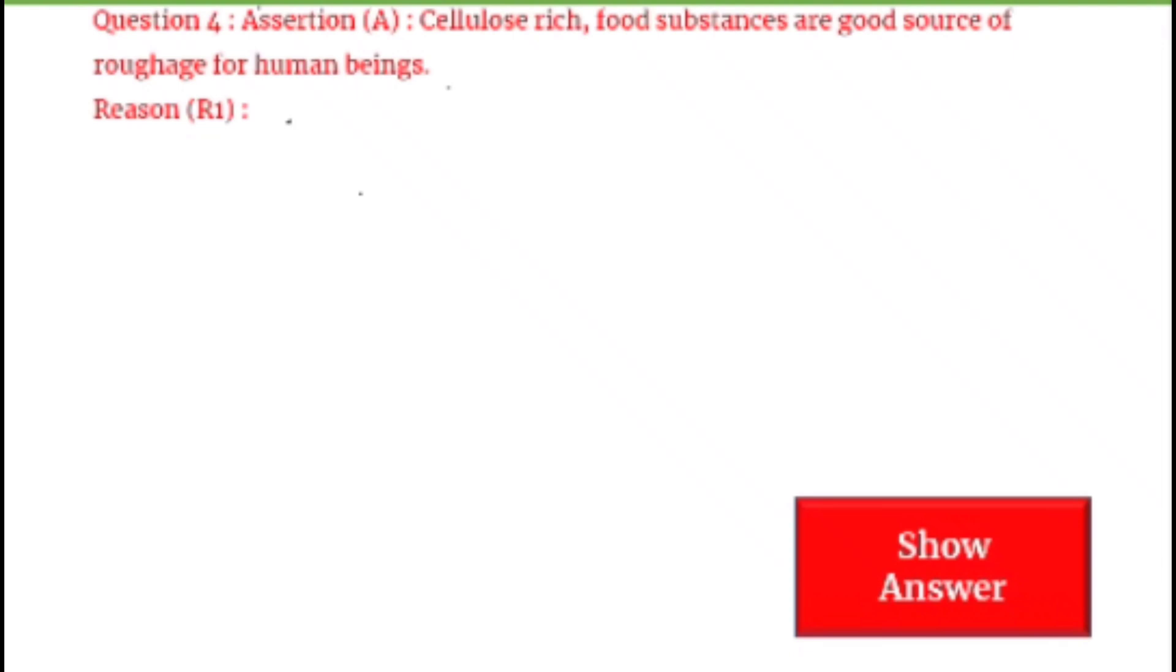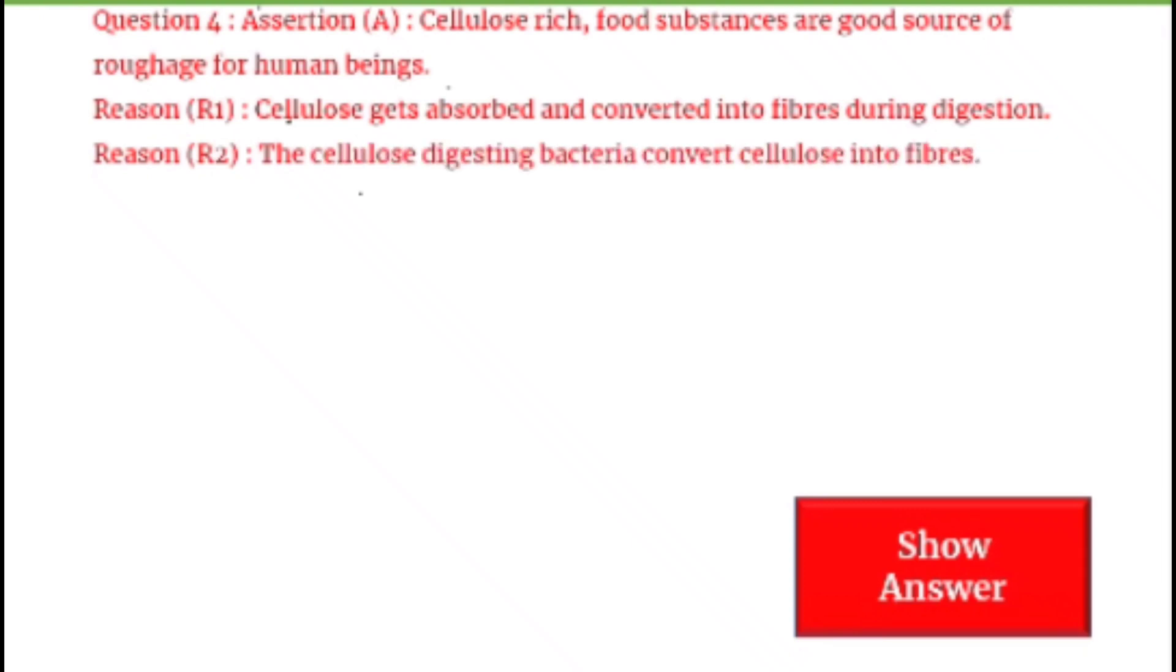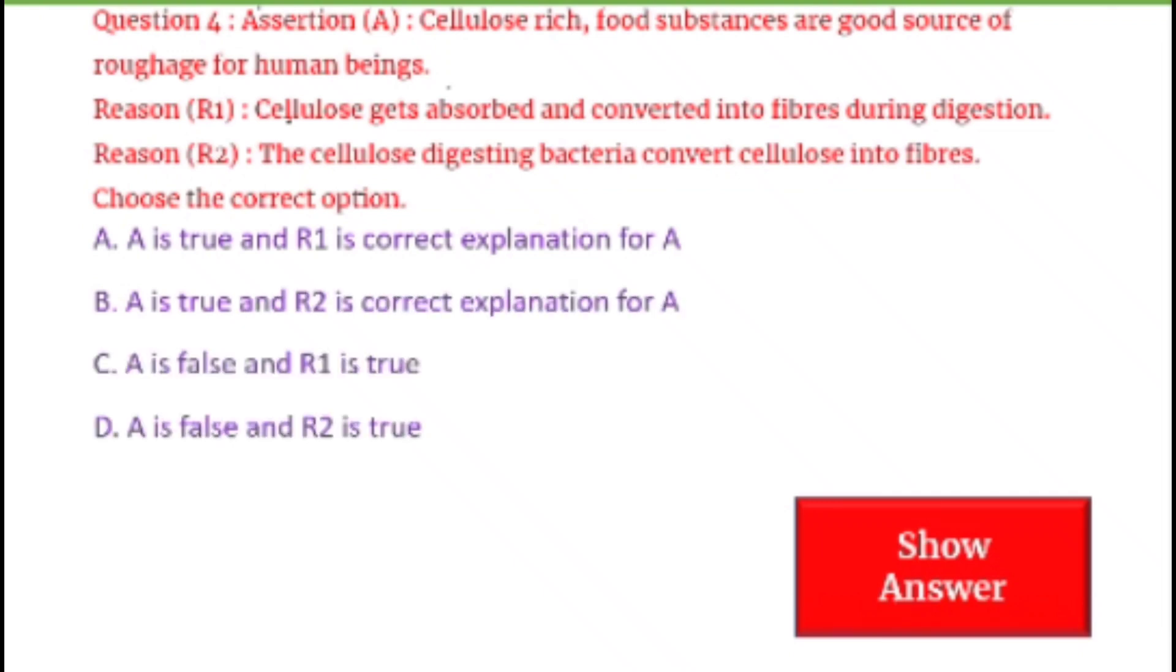Next question on your screen. Assertion: Cellulose-rich food substances are good source of roughage for human beings. Reason 1: Cellulose gets absorbed and converted into glucose during digestion. Reason 2: Cellulose digesting bacteria convert cellulose into glucose. Let's see, Option B is the correct option. Option A: A is true and R1 is correct explanation of A. Option B: A is true and R2 is correct explanation of A. Option C: A is false and R1 is true. Option D: A is false and R2 is true. What is the answer? A is true and R1 is correct explanation of A.